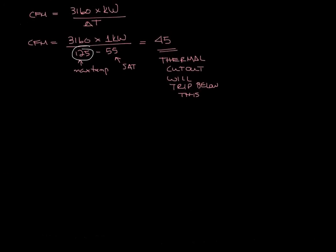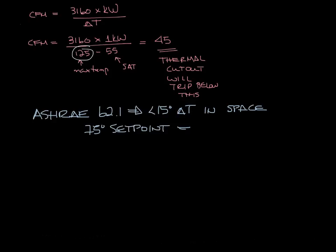This is the absolute minimum CFM that you can have and not exceed this 125 max temperature. ASHRAE 62.1 recommends that less than 15 degree delta T be supplied to the space. So for a 75 degree setpoint, this is a 90 degree supply air into the space.